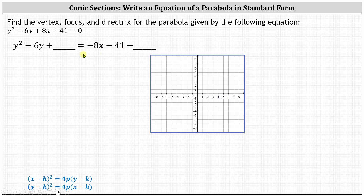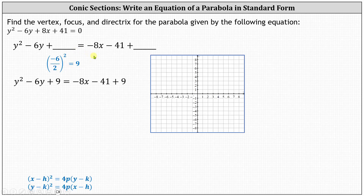Now we complete the square on the left side of the equation to form a perfect square trinomial. Recall to do this, we add the square of half of the coefficient of y to both sides of the equation. The square of half of negative 6 equals the square of negative 3, or positive 9. We now add 9 to both sides of the equation.